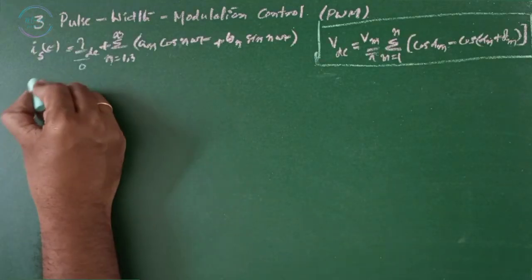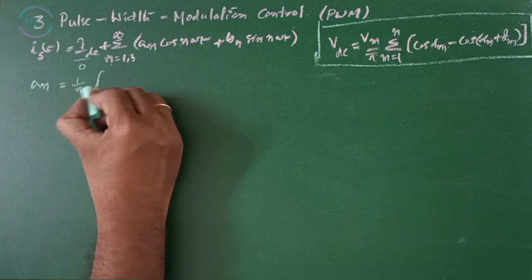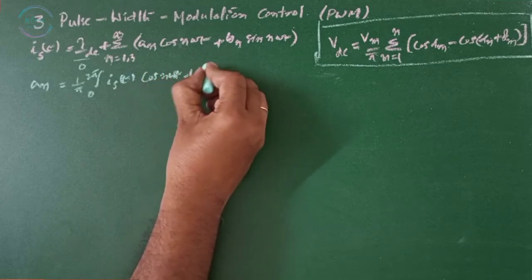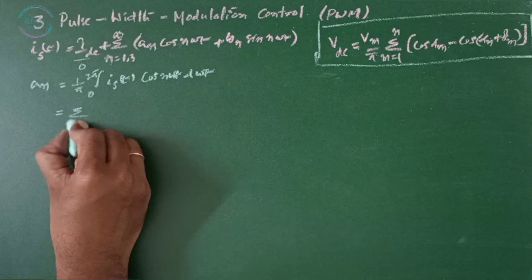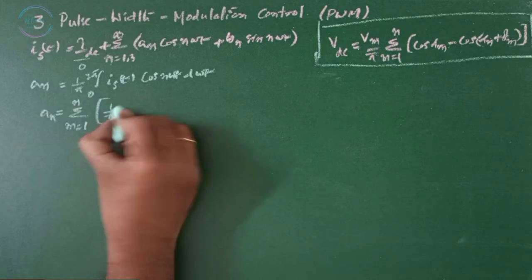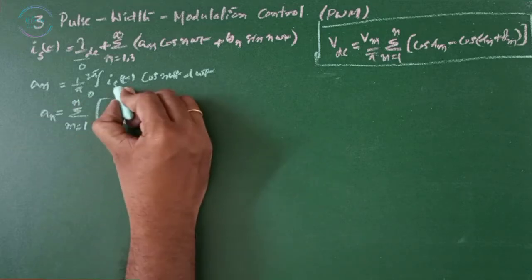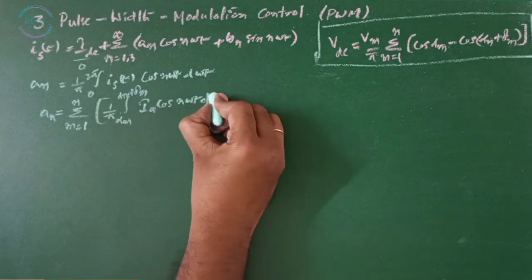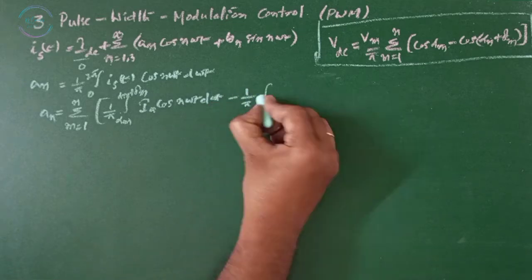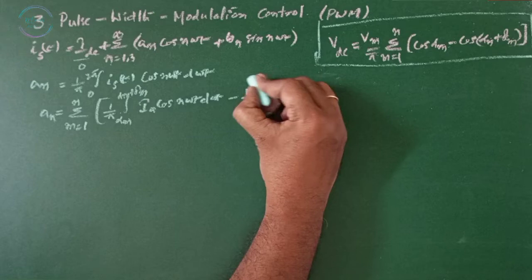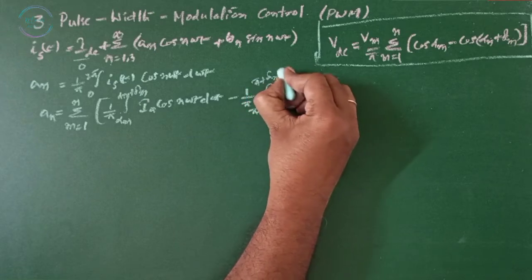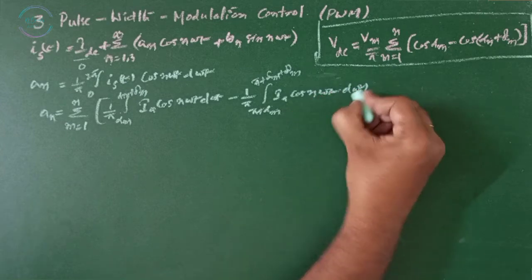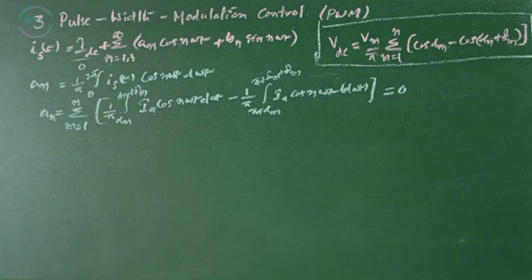As you know, Idc equals to 0. Now An equals to 1 by pi integral 0 to 2 pi Is of t cos n omega t d omega t. Now when you solve that, sigma m 1 to n 1 by pi integral alpha m alpha m plus delta m Ia cos n omega t d omega t equals to 0 as no even harmonics.